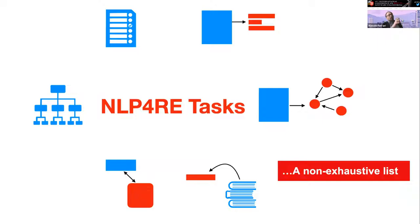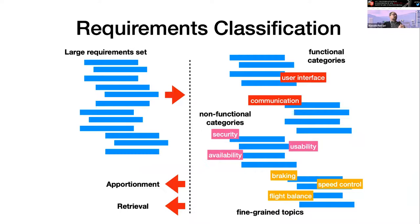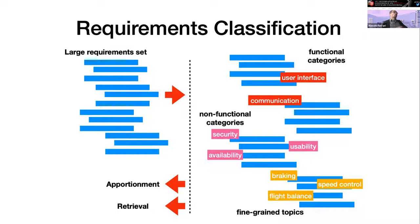Let's give an overview of the requirement tasks to which NLP can be applied to provide some automation. This is a non-exhaustive list. A typical case is requirements classification — given a large set of requirements, I want to partition them into functional categories like user interface or communication, or simply distinguish between what is a requirement and what is just informative text. This can be useful for later retrieval and apportionment of requirements to specific software modules.